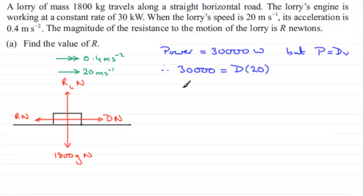So we can now divide both sides by 20, and if you do that, D turns out to be 1,500.